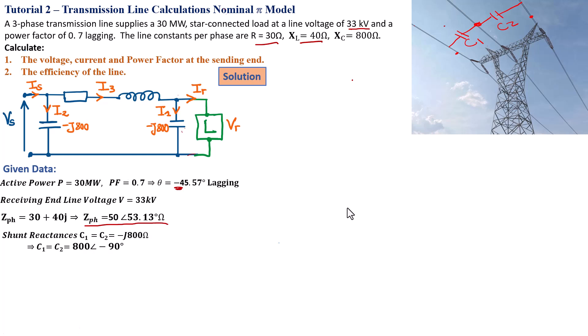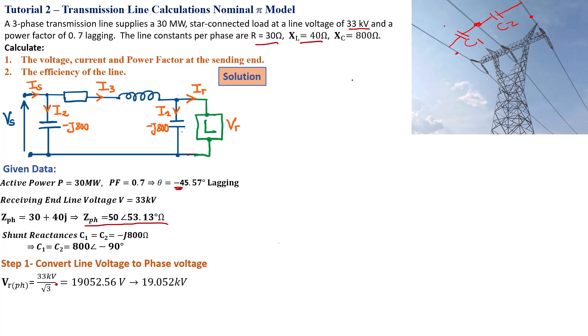We also have the shunt reactances — C1 and C2, both negative 800 ohm, which gives us 800 at an angle of negative 90 degrees because it's purely capacitive. The first step in solving this problem is to convert the line voltage into a phase voltage. Our line voltage is 33 kilovolt, so we divide by the square root of 3 to get 19.052 kilovolt.